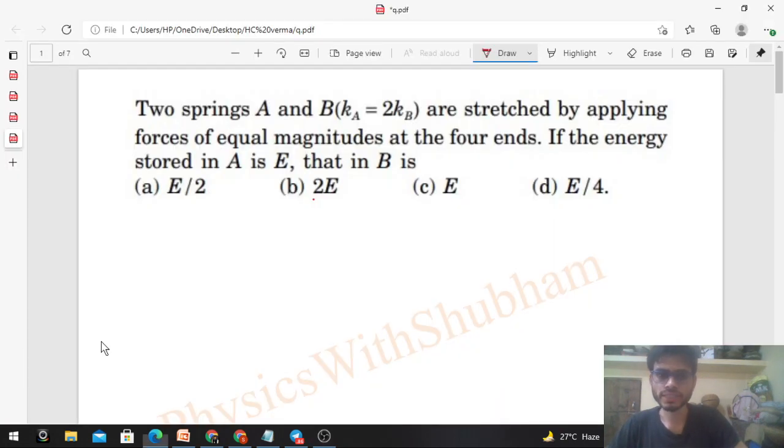Okay, hi everyone. So today let us discuss this interesting problem. It says two springs A and B, and the relation between the spring constants are given. They are stretched by applying forces of equal magnitudes at the four ends. If the energy stored in A is E, that in B is? So this type of spring, when you stretch the spring by applying equal forces at the two ends, both ends you have equal force to put.